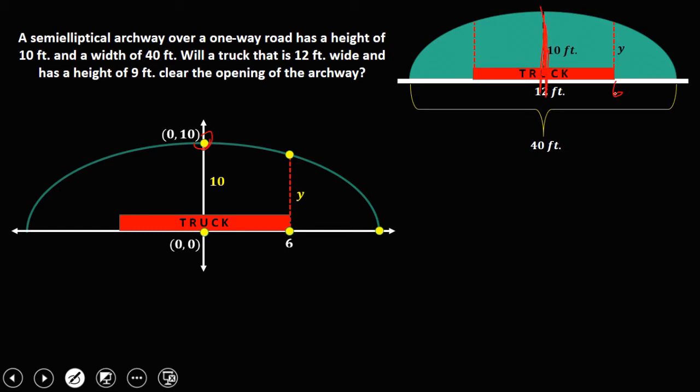And this one is (6, y), because x is 6 and y is unknown. So that's the coordinates of that point, (6, y). And this point is 20, so 40, half of 40. So this one is 20.